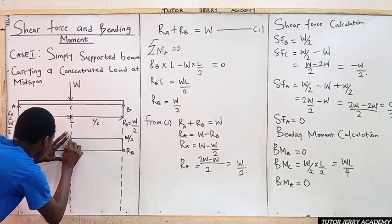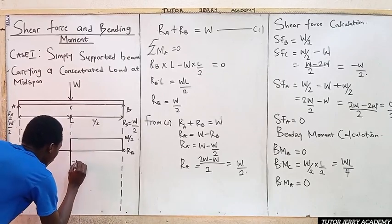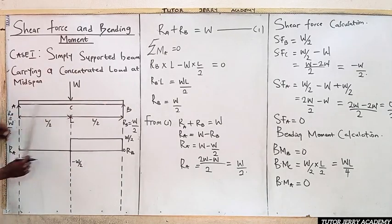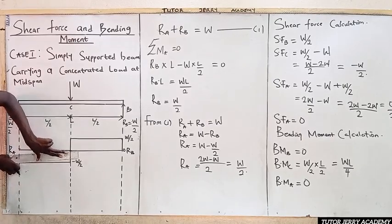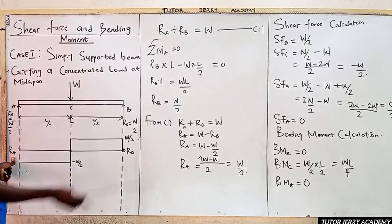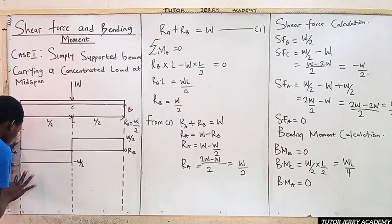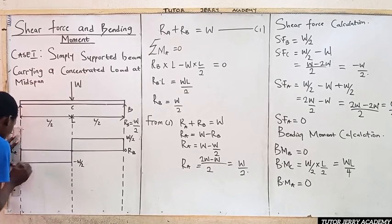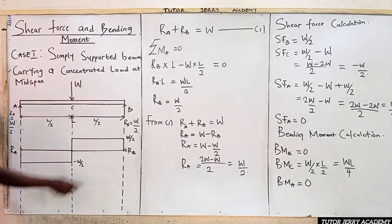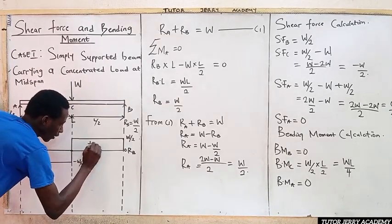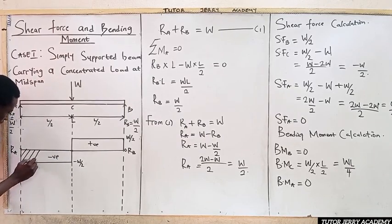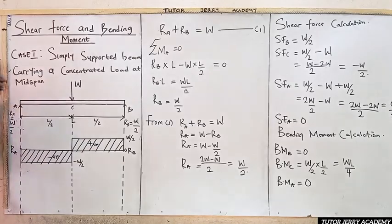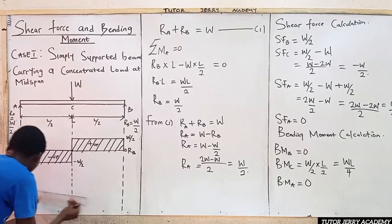At point C, the shear force becomes minus W/2, which is negative, so we go below the reference line to minus W/2. There is no force from C to A, so the line continues horizontally at minus W/2 up to point A. At point A the shear force is zero, so we return to zero. We have W/2 above and minus W/2 below — this is our shear force diagram.